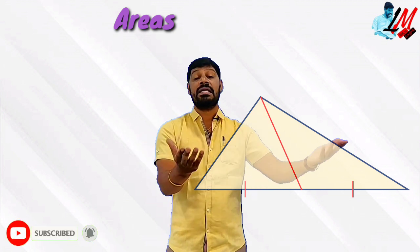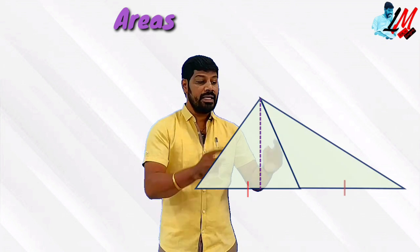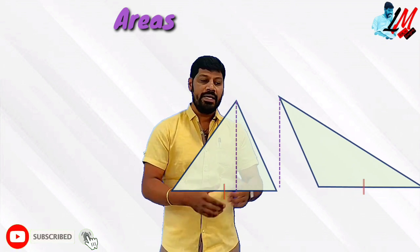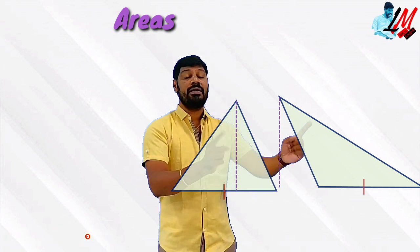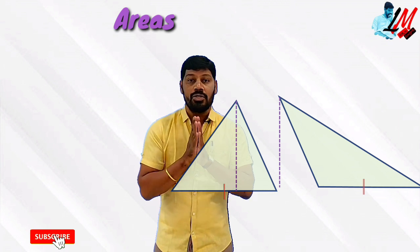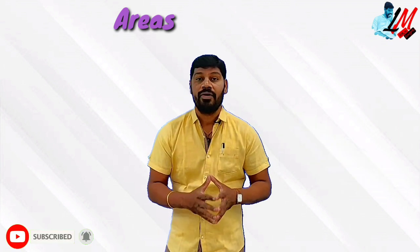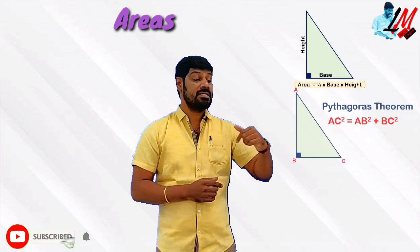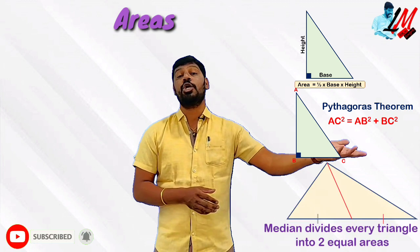The most important thing is that these two triangles are equal to each other. These two are congruent, and they are definitely equal to each other. So these three different pieces of information are important for solving problems in Exercise 1: area of a triangle, Pythagoras theorem, and the property that a median divides every triangle into two equal areas.